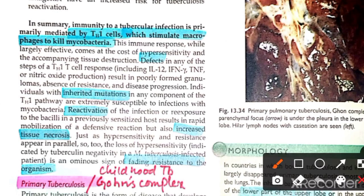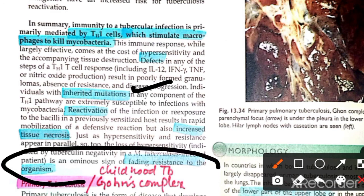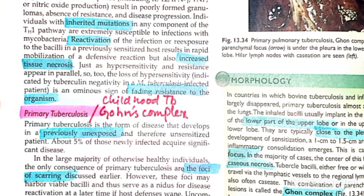The result includes granulomatous inflammation, caseous necrosis, and formation of epithelioid histiocytes and giant cells, all driven by TH1 helper cells and macrophage stimulation. If there are inherited mutations in this pathway, or if the patient has HIV, macrophage function will be impaired. Next, we will talk about primary TB, secondary TB, and morphology.